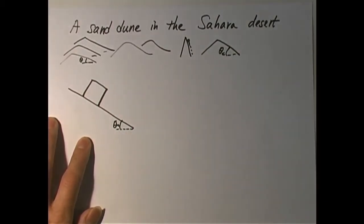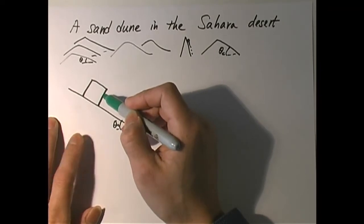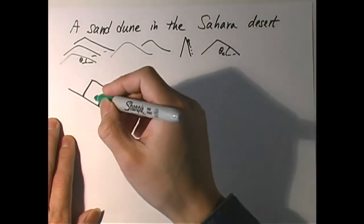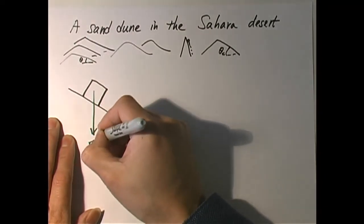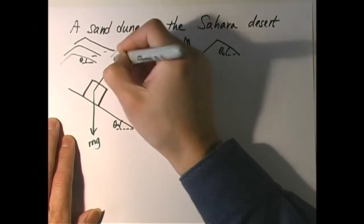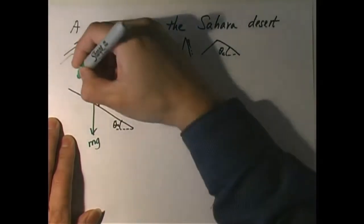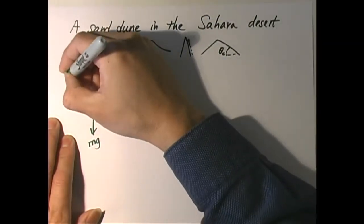To do so, we first identify our system, which is the box or grain of sand — it's the same thing. Let me draw a free body diagram. So you have mg and you have N. Since the box is not moving, there must be an upward force along the incline to hold it off, so there must be a friction force. And that's static because it's not moving.